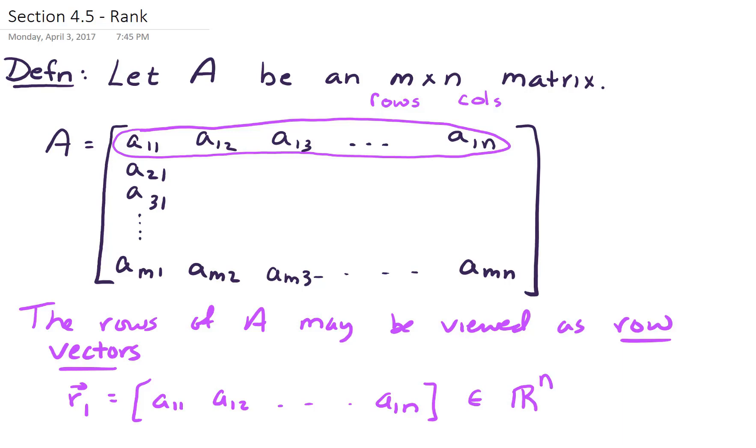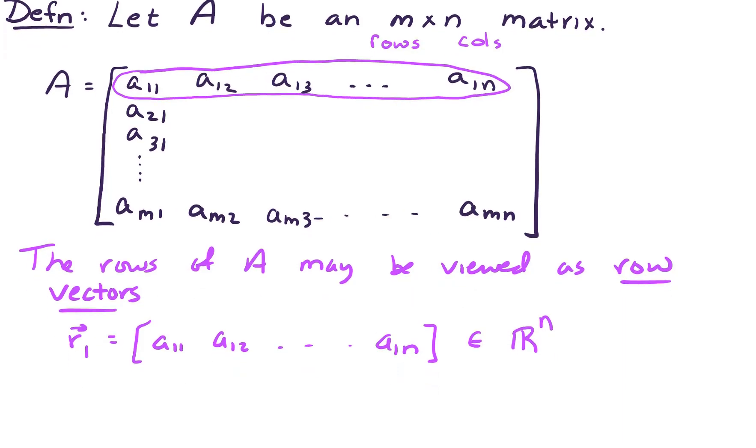And furthermore, we can say that there are m of these row vectors. So there are m of these: r1, r2, all the way up through the mth row. So we've got row vectors, and we know that they live in R^n, and there are m of the row vectors.